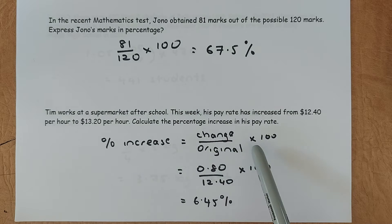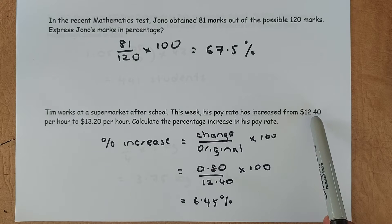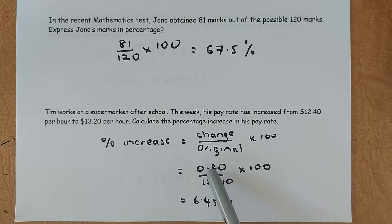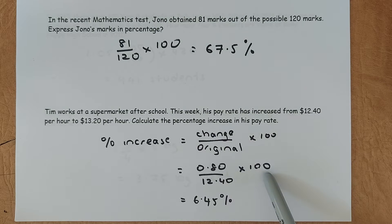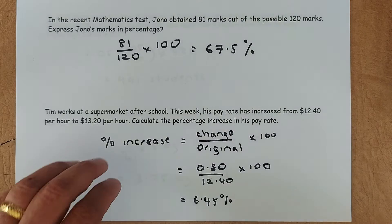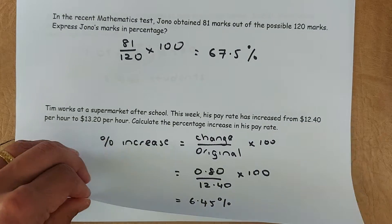Change over original times 100. So the change from $12.40 to $13.20 is $0.80. Original amount is $12.40. You multiply by 100. Put in your calculator. It's 6.45%. So that will give you two marks in the first two questions.